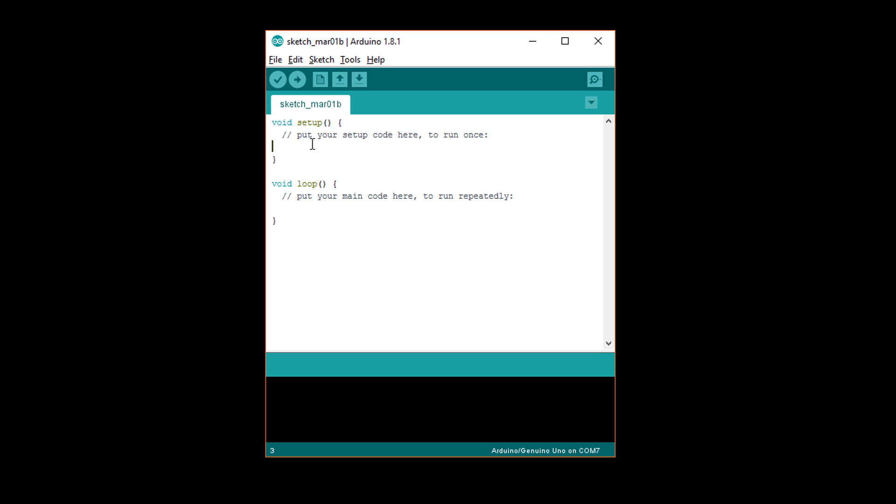When you are ready to send your program to the Arduino, you must first compile it. When you click the upload button, the AVRGCC compiler, another program that ships with the Arduino Development Environment, takes your code and turns it into machine code, a language that the microcontroller on the Arduino board can understand. It acts as a kind of translator.